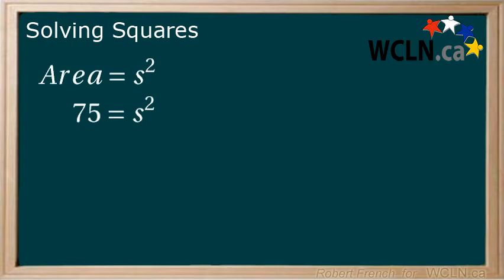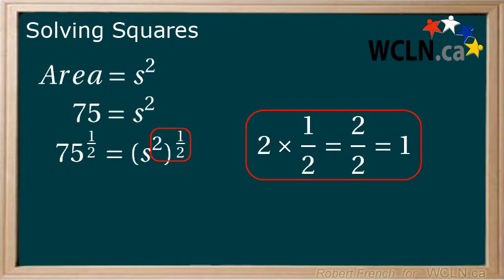Now, let's bring back our area question we were working on. We have 75 equals s squared, and we need to isolate the s. We are going to use all three of the ideas we just reviewed. We are going to raise both sides of the equation to the power of 1 over 2. Now we have a power of a power on the right side of our equation. 2 multiplied by 1 over 2 equals 2 over 2, which equals 1. Now we have s to the power of 1, which can just be written as s. We now have an answer in exponent form of s equals 75 to the power of 1 half.